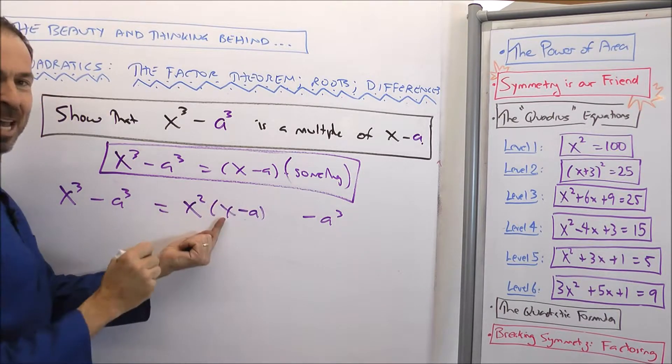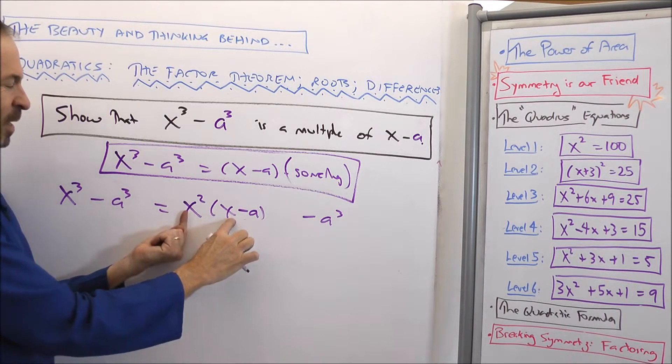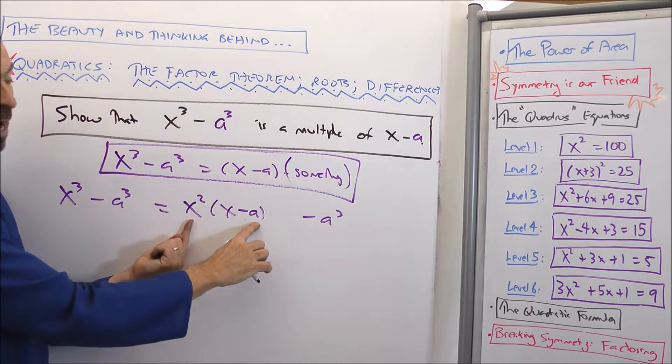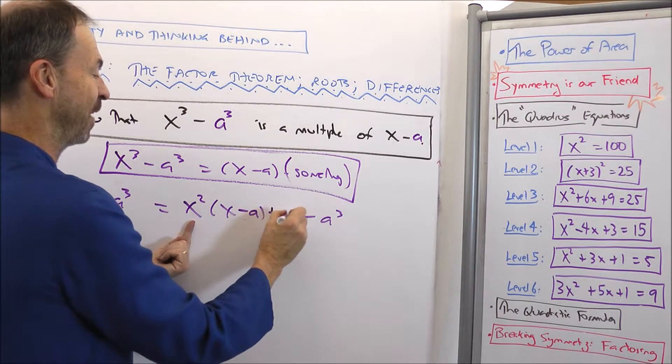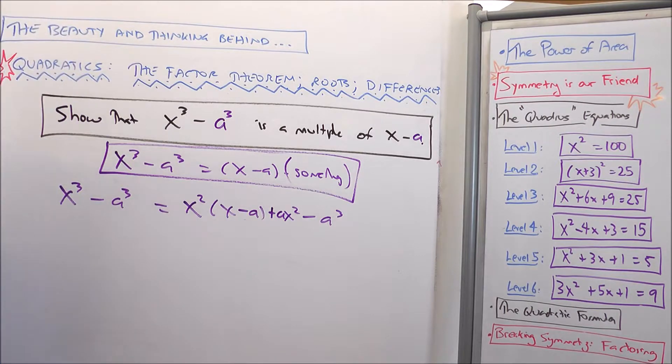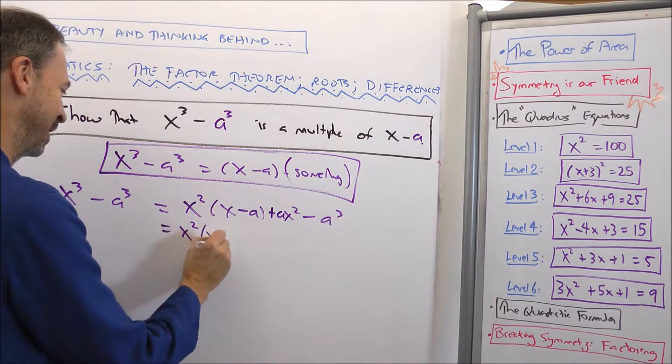I really want x minus a. Okay, I'll make x minus a. x² times x, x³, and I've introduced negative ax², so I better counteract that with positive ax². All right, let's keep going. x² times (x minus a),